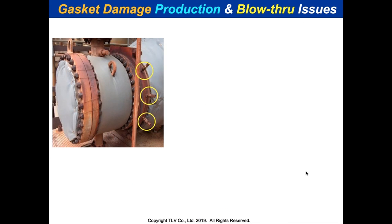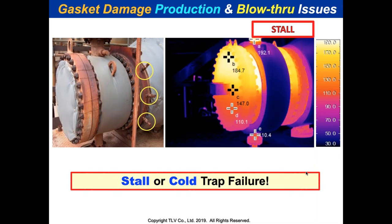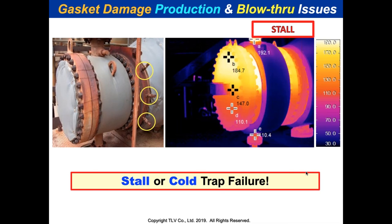It's easy to spot stall when walking a site. A leak collar tells you there's thermal stratification and a hydraulic problem — thermal and hydraulic stresses damaging the channel head. An infrared temperature reading shows stratification. That's essentially a stall, which is like a cold trap failure even if the trap is functional. The trap is fine; it's the pressure differential that's bad. Operators open the bypass — what I call the double whammy: you damage equipment and blow steam into the return header, causing water hammer, energy loss, and condensate loss.